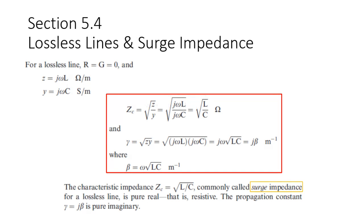So what is the lossless line? A lossless line — what we do is we just neglect R and G. So there are no real power losses. The power sending equals the power received. As we mentioned in the last lecture, small Z is the impedance and small Y is the admittance, but these are per unit length, so they are per meter. If you multiply this data by the length, it will give you capital Z and capital Y.